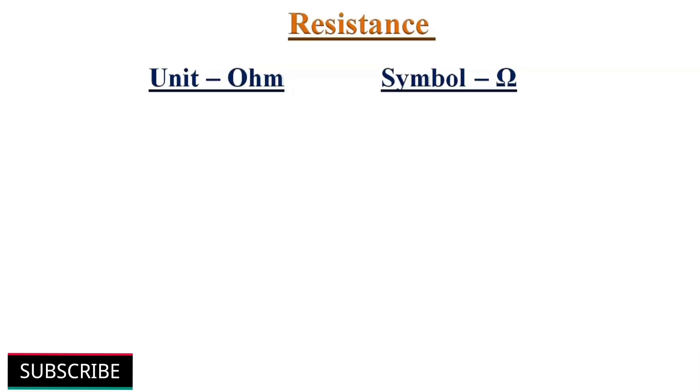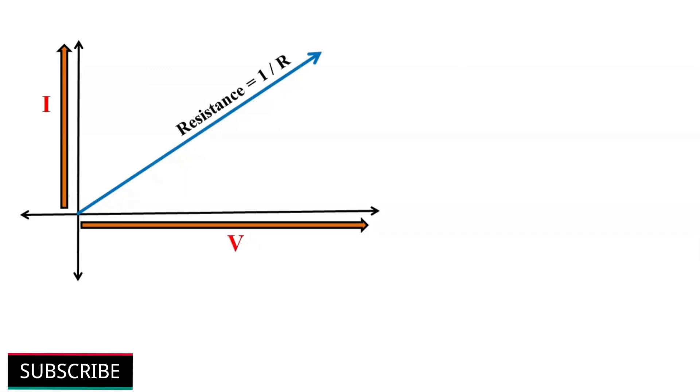The unit of resistance is ohms and denoted by symbol omega. If one volt of voltage is applied across a resistor and one ampere current is flowing through that resistor, then we can say that the resistance of that resistor is one ohm. The resistor is a linear element. It means if we increase or decrease the voltage applied to this resistor, the current that is flowing through it will also increase or decrease. This slope defines the VI characteristics of the resistance.